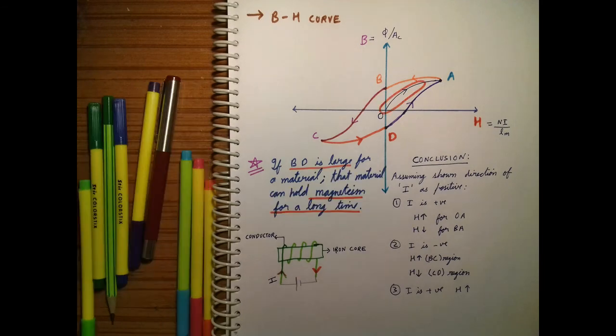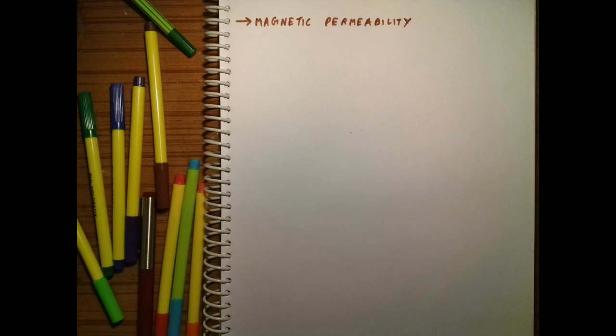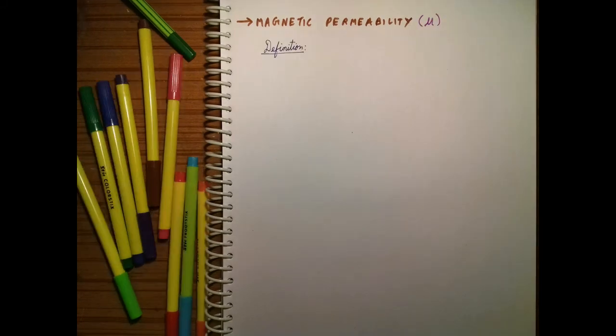The important conclusion is: if BD is large for a material, then that material can hold magnetism for a long time — that material can be any iron core or any magnetic material. We never operate in the saturation region, that is, close to the saturation point, because at that point the magnetic material stops displaying its magnetic properties. From the BH curve, if we operate on the line OA — especially in the region circled in red — there is a linear relationship between B and H, that is B is directly proportional to H: B equals mu times H, where mu is magnetic permeability.